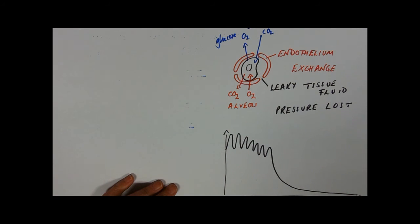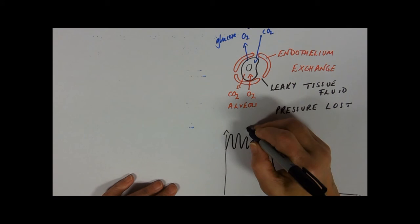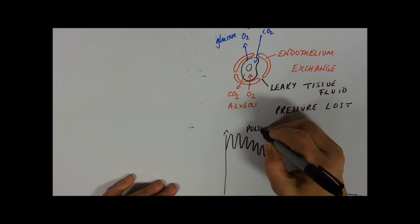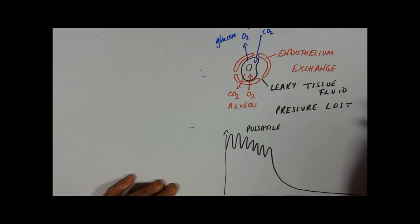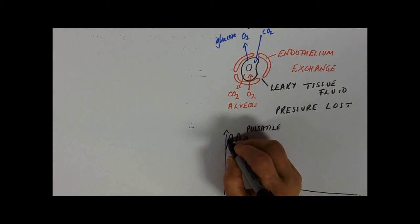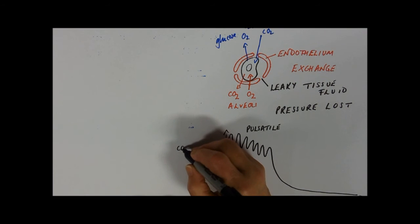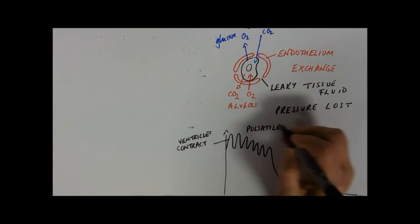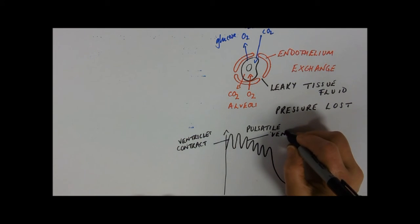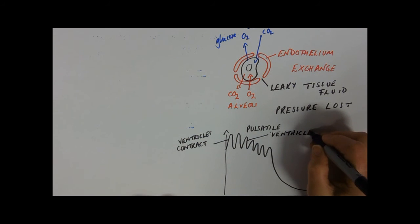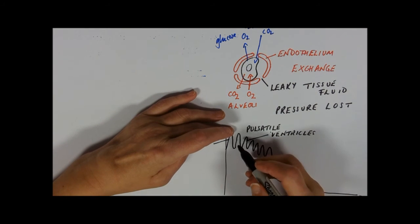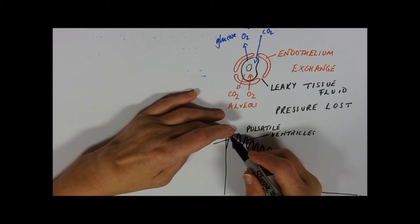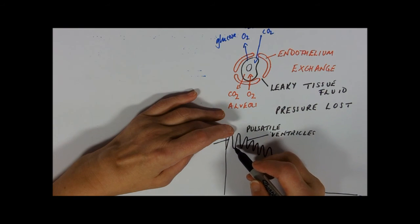Into the arteries, into the arterioles, up and down, up and down, into the capillaries and being lost, and then into the veins, venules and veins. We call this flow pulsatile. This is what you can feel in your wrist and your neck—those arteries bouncing around. The pressure is going up as the ventricles contract and it goes down as the ventricles relax.